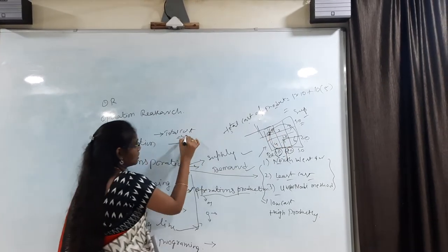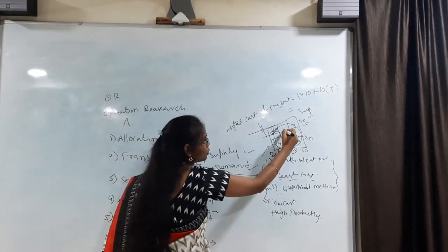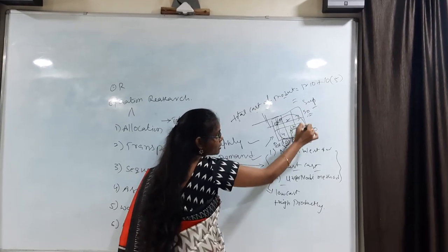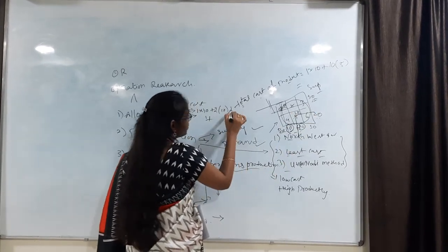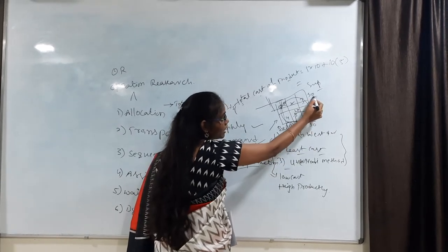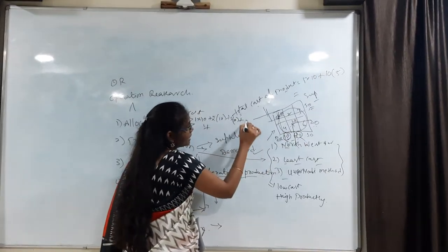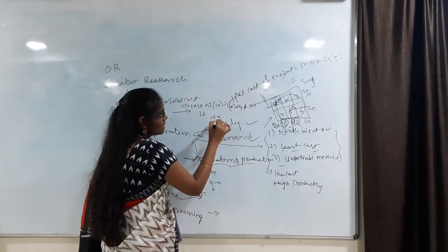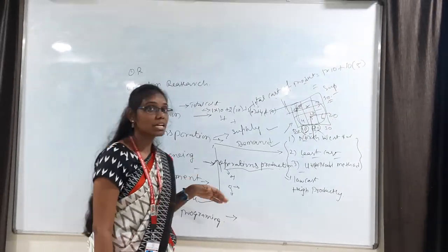In the Least Cost method, the total cost calculation works as follows: the least value is 1 multiplied by the supply/demand value of 10, plus 2 multiplied by the next comparison value, plus the least value of 3 multiplied by its demand and supply value of 10, plus the next least value 4, and we continue to find out the demand and supply values at each step, finally computing the total cost of the product or component.